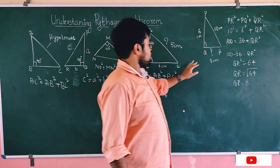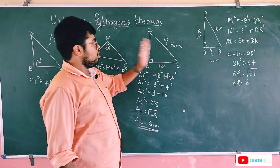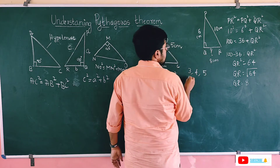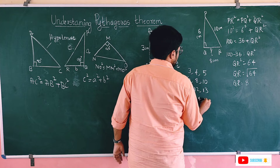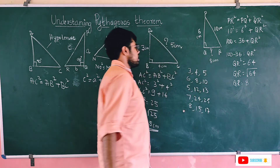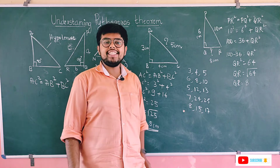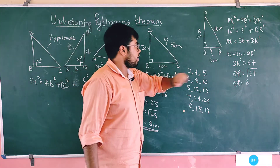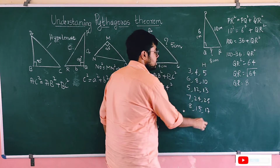Looking at both examples, there are special sets of numbers called Pythagorean triplets: 3, 4, 5; 6, 8, 10; 5, 12, 13; 7, 24, 25; and 8, 15, 17. These numbers satisfy the Pythagoras theorem. In each triplet, the last and largest number is the hypotenuse. For example, 3 and 4 give hypotenuse 5, and 6 and 8 give hypotenuse 10.